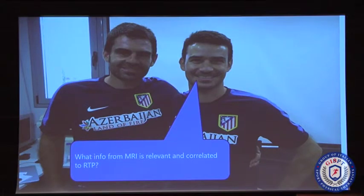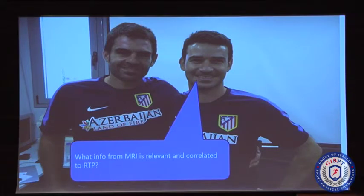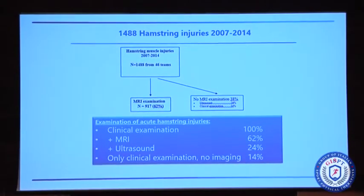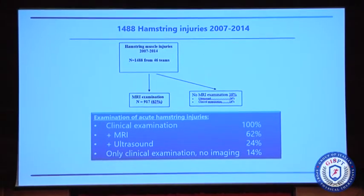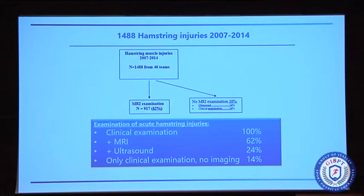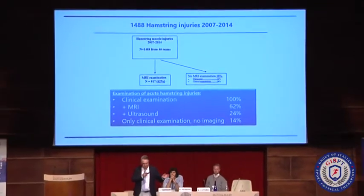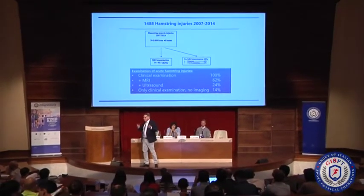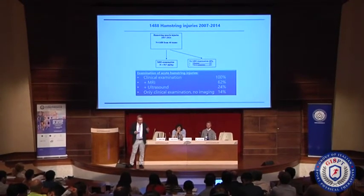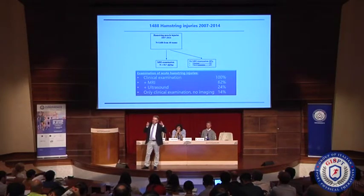Out on the field, we visit teams all the time — we have visited all the best teams — and there's always the same question about muscle injuries: what use could we have of imaging? What information does MRI or ultrasound give us? We made a study and asked: what's the use of imaging at the elite level? We followed almost 1,500 hamstring injuries during seven years. Clinical examination is the basis — that's very important. All injuries were examined clinically. But as you can see, 86% of all injuries also had some sort of imaging — MRI or ultrasound. Only 40% trusted only their hands and clinical examination.